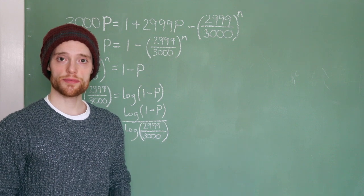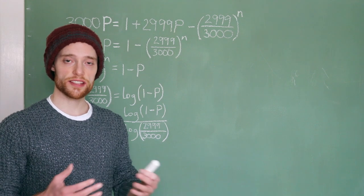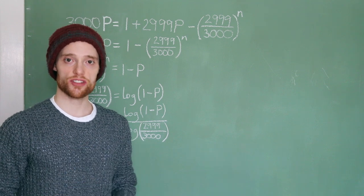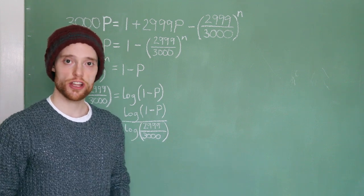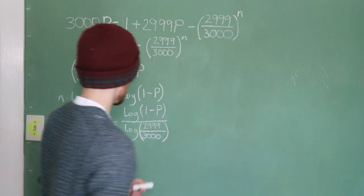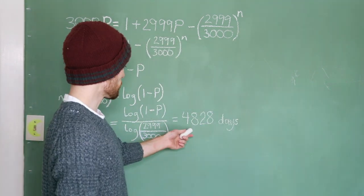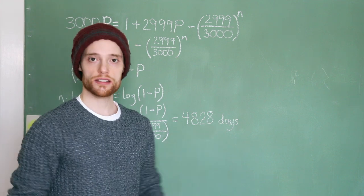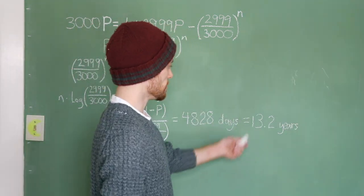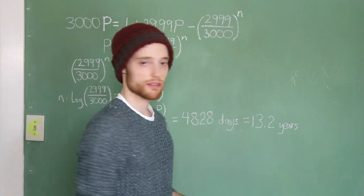So, now all we have to do is pick the probability we're going for. So, let's say we want to figure out how long it'll take to accrue an 80% chance of finally booking a co-star. We just plug 80% or 0.8 into p, and that gives us about 4,828 days, which is about equal to 13.2 years. Which is a while.